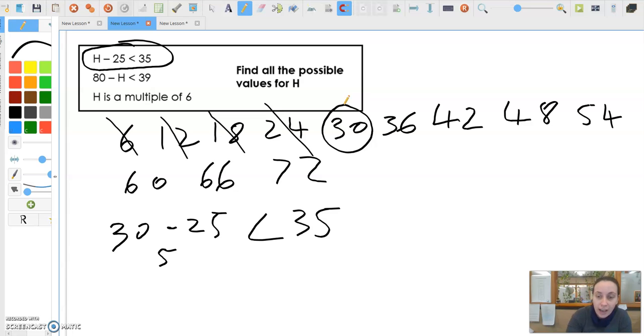36 minus 25 is 11. Okay, so I had that as an option. 42 minus 25, I've got 17. 48 minus 25, I've got 23. 54 minus 25, I've got 29. So it could be that.